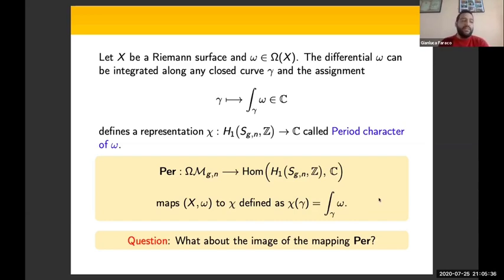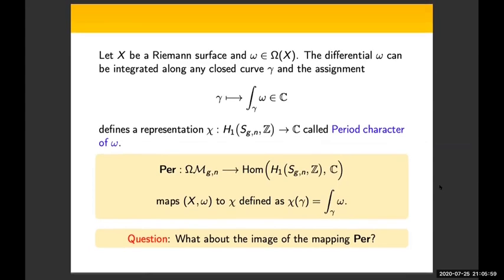Now it sounds natural to ask what the image of such a mapping is. In other words, suppose we are given a representation from the first homology group to C. Does it arise as the period character of some abelian differential with respect to some complex structure X? This is the question we would like to answer. Let me state first the theory for closed surfaces.